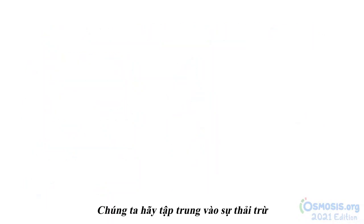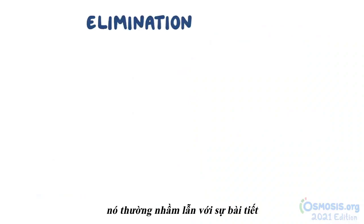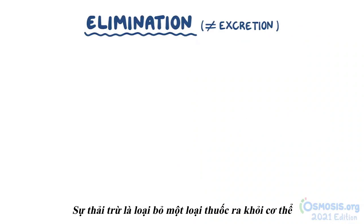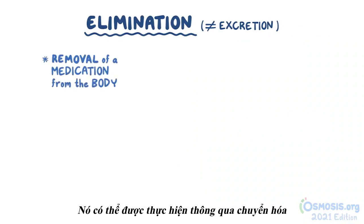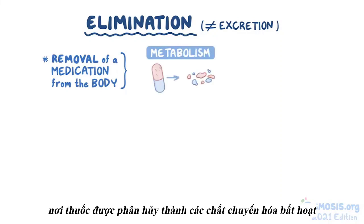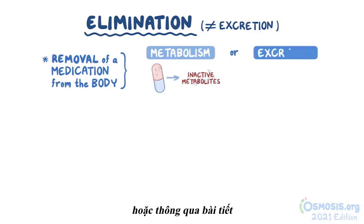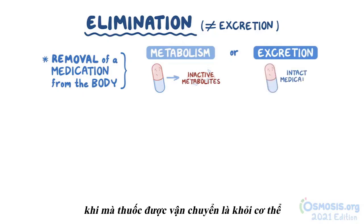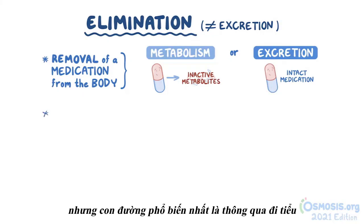Now let's focus on a process called elimination, which is often confused with the process of excretion. Elimination is the removal of a medication from the body. This can be accomplished through metabolism, where the medication is broken down into inactive metabolites, or through excretion, which is when the intact medication is transported out of the body — most commonly through urination.